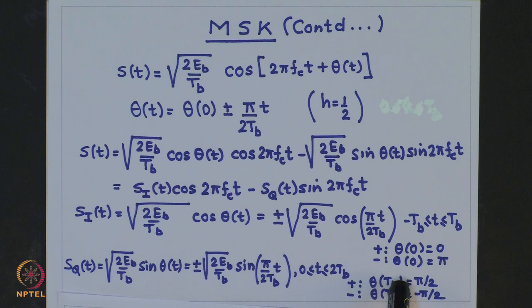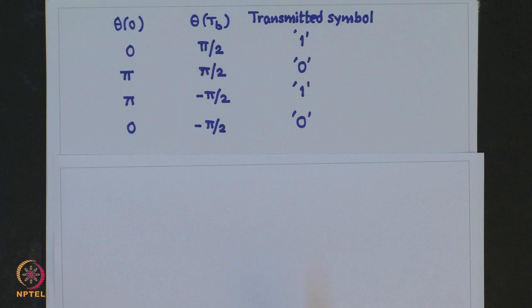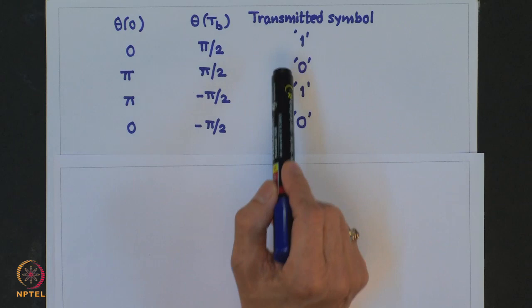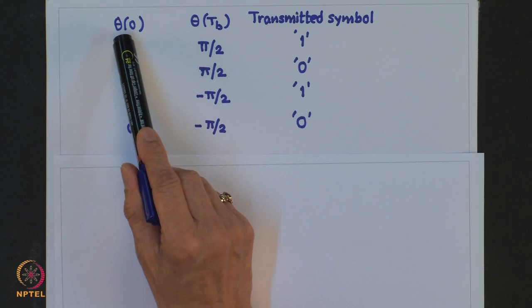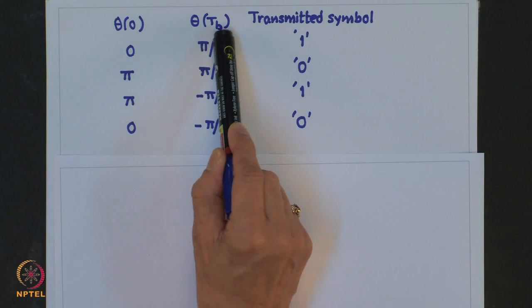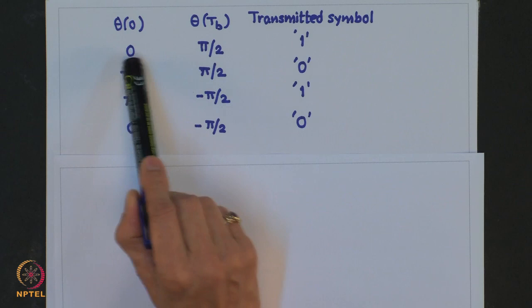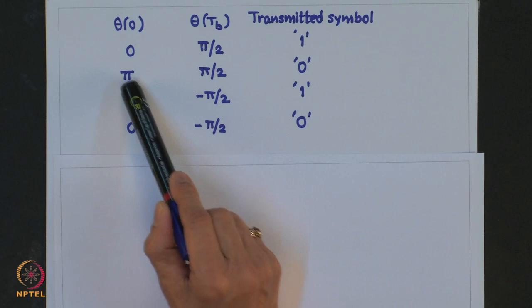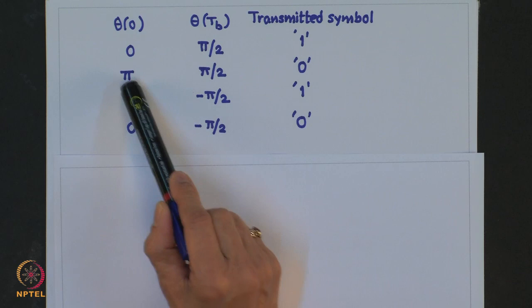Similarly, when theta(T_b) is equal to pi/2 this quantity is positive, and when theta(T_b) is equal to minus pi/2 or 3pi/2 modulo 2pi, this quantity becomes negative. We said that there are 4 states, and the transmitted symbol information is contained in the phase states theta(0) and theta(T_b). We will have 4 phase states: when it is 0 and pi/2 we know that 1 has been transmitted; when it is pi and pi/2 we know 0 is being transmitted, and similarly for the other states.